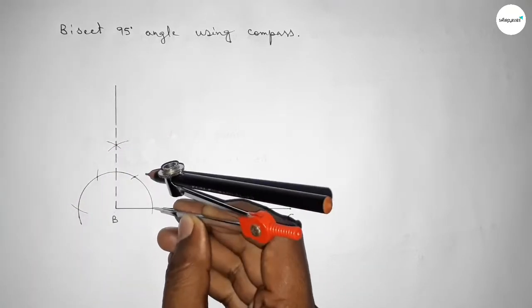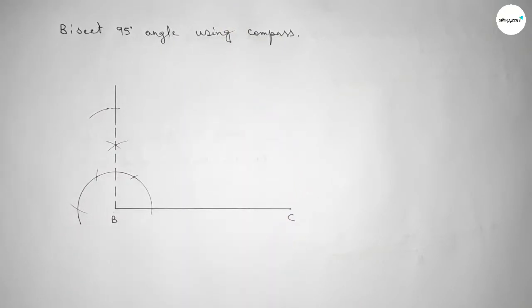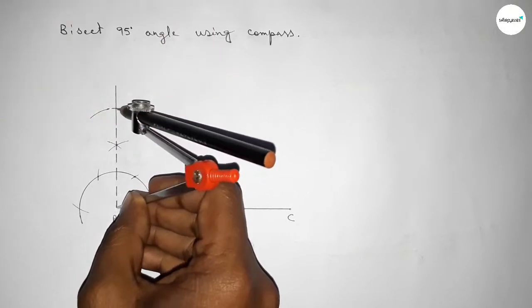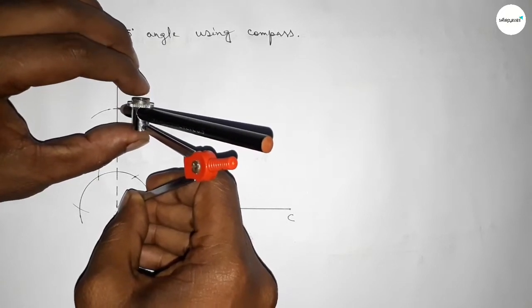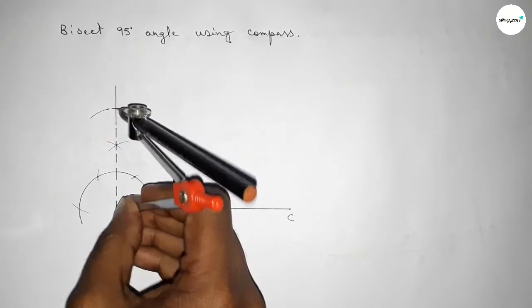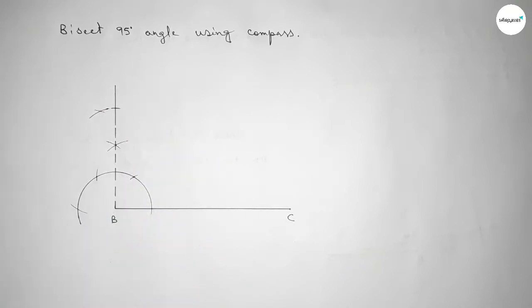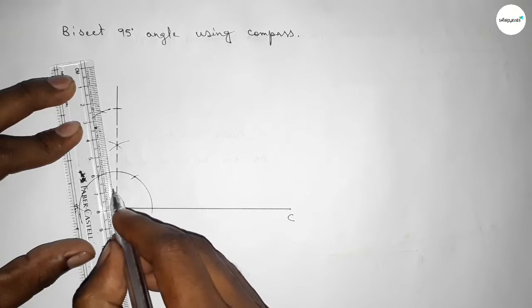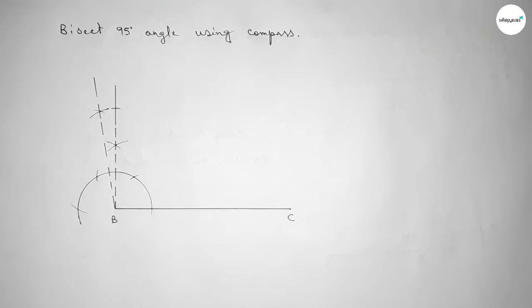Next, taking the same length and putting the compass here and cutting here and drawing an arc. Now taking the length from point B to draw a 100-degree angle, putting the compass here and cutting here. Both curves intersect at a point. Now joining this line to get a 100-degree angle.